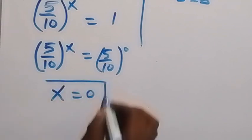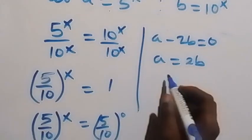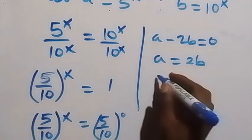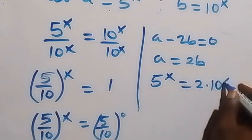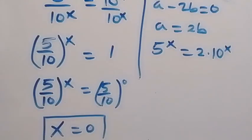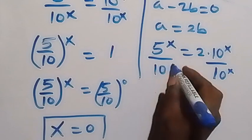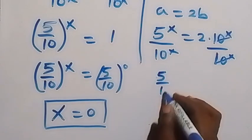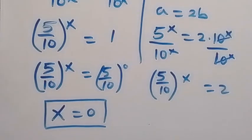From the second case, a equals 2b. Substituting, 5 raised to power x equals 2 multiplied by 10 raised to power x. Dividing both sides by 10 raised to power x, and canceling, we get 5 over 10 raised to power x equals 2.